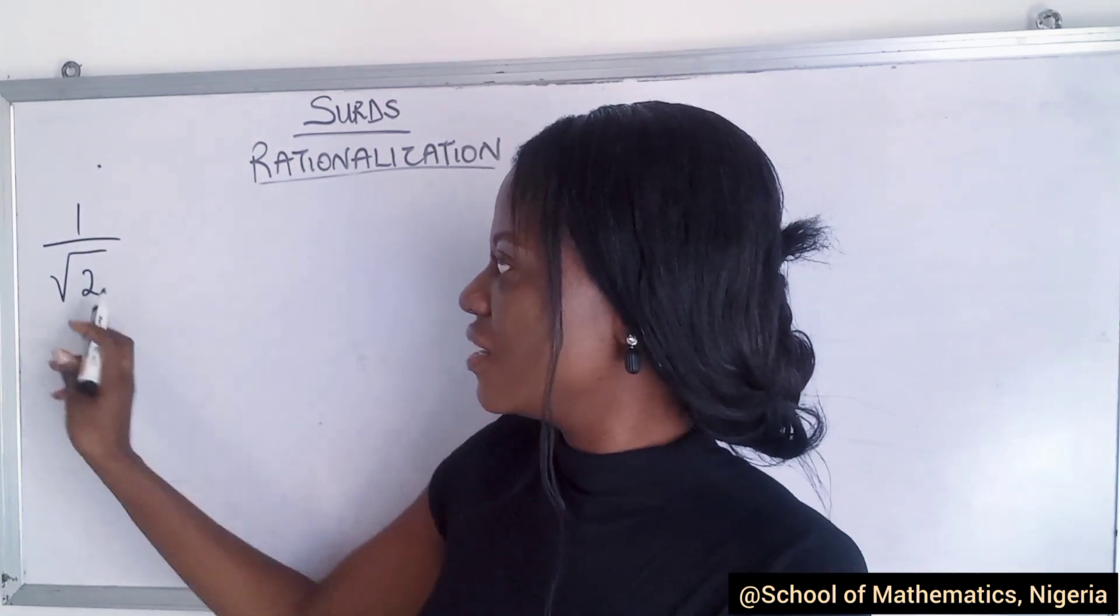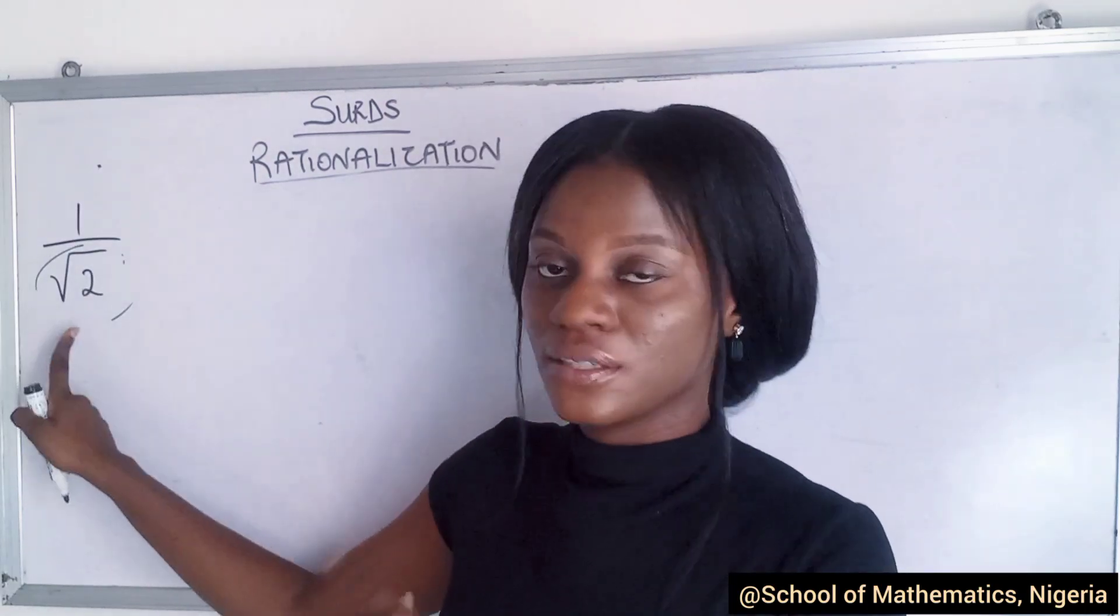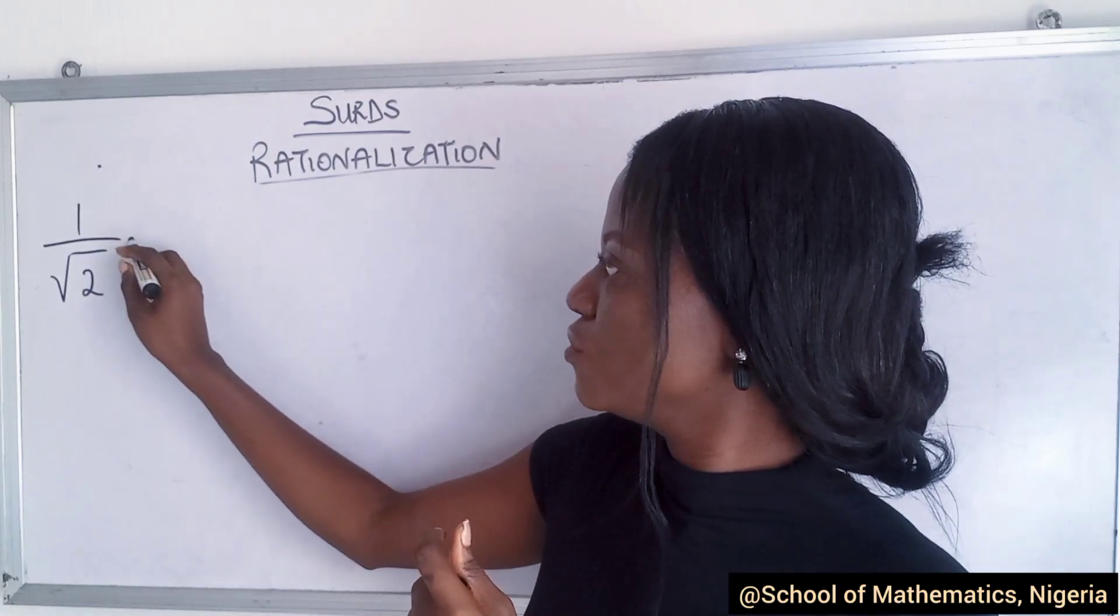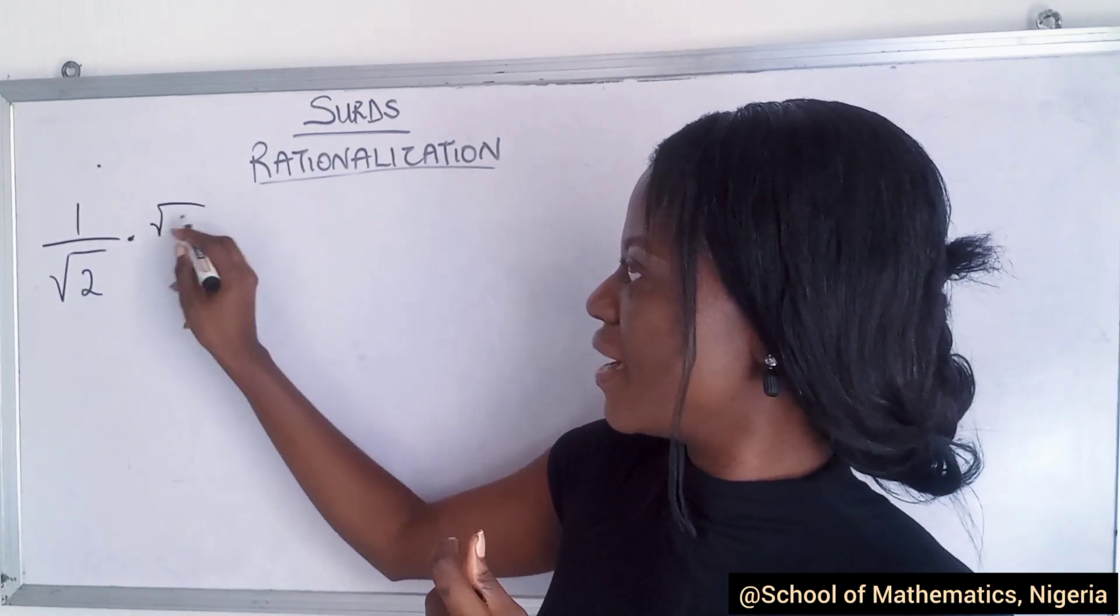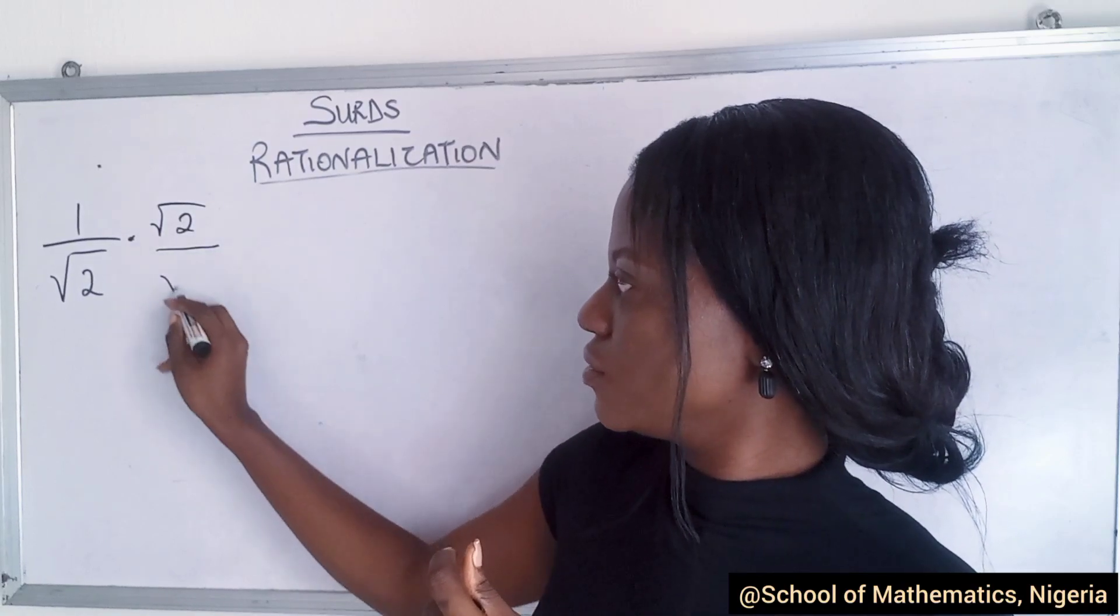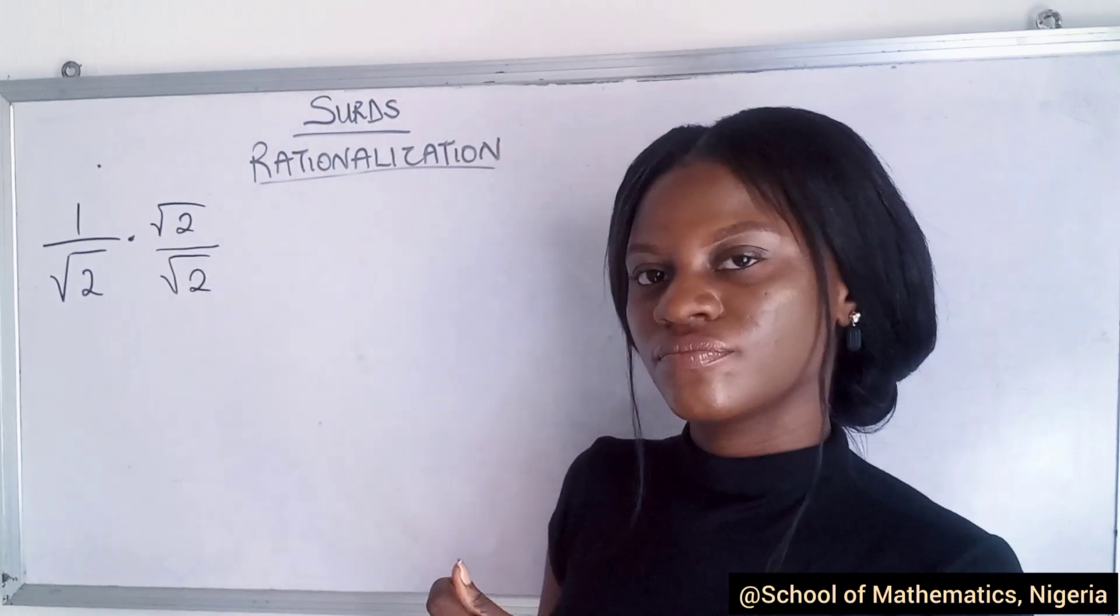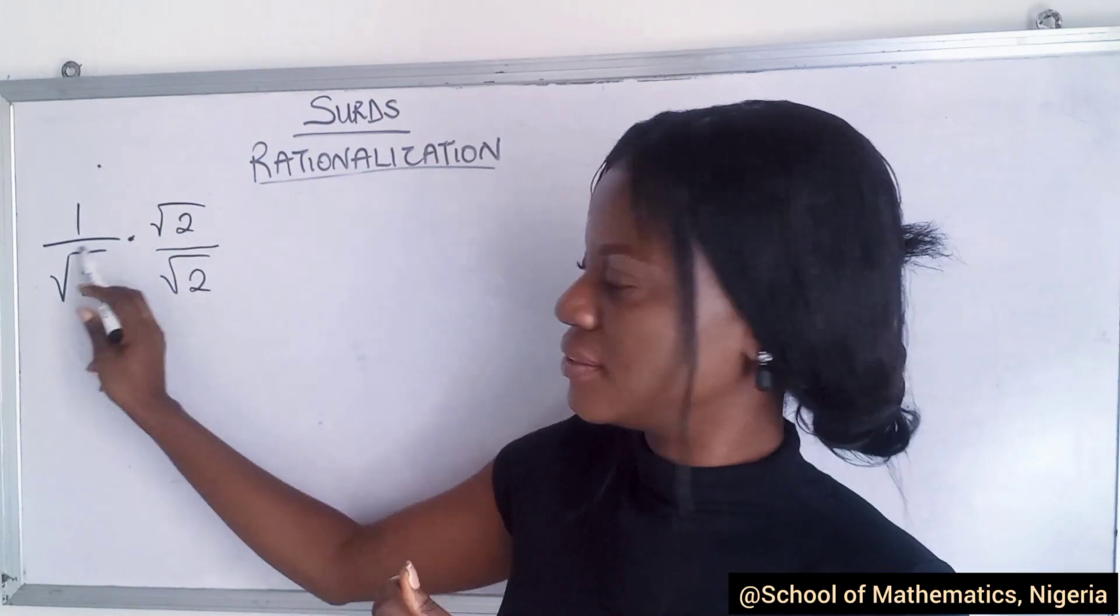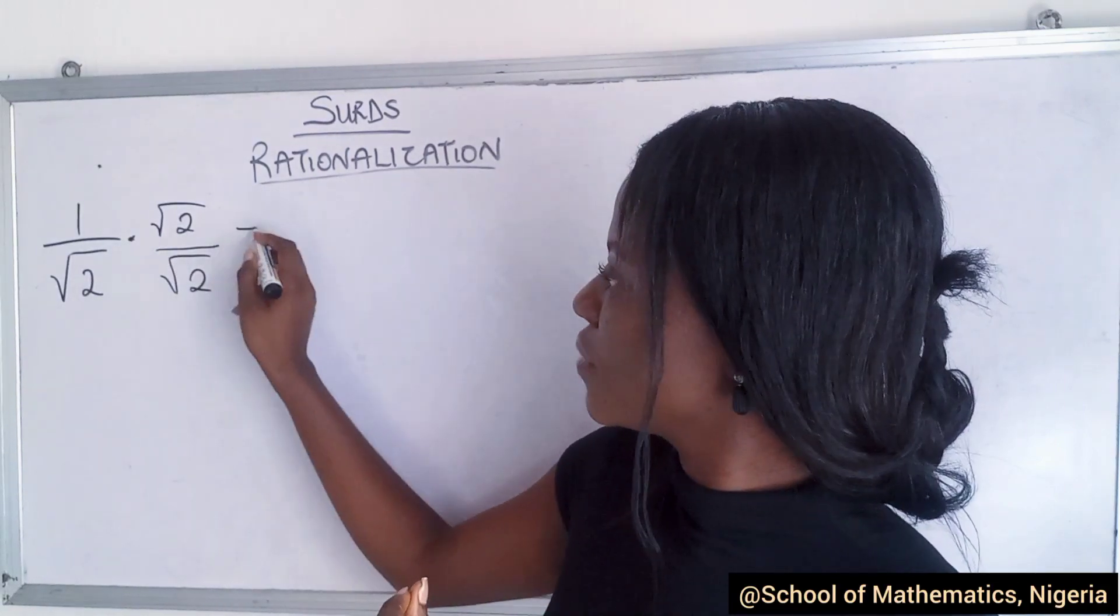How do we rationalize this? We multiply the numerator and the denominator by the denominator. Did you get that? We multiply the numerator and the denominator by this denominator, so now we have 1 times √2 to be √2.